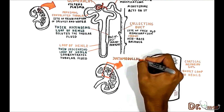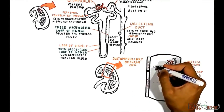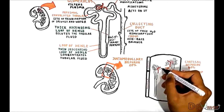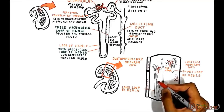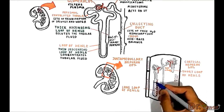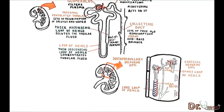Twenty percent of all nephrons are juxtamedullary nephrons. The glomeruli of juxtamedullary nephrons are located deeper in the cortex and have long loops of Henle extending deeper into the inner medulla. The medullary region has capillary loops organized similarly to the loop of Henle, known as the vasa recta. In these capillaries, the flow is very slow, which preserves the osmolar gradient of the interstitium. However, this slow flow also keeps the partial pressure of oxygen in the medulla lower than in the cortex, and even though the metabolic rate of the medulla is lower than in the cortex, it is more susceptible to ischemic damage.